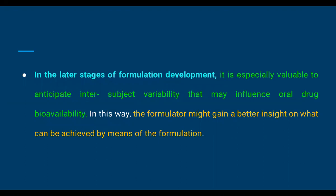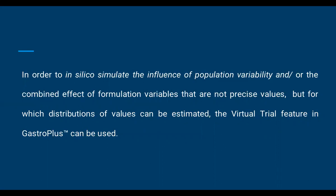First topic: virtual trial. In the later stages of formulation development, it is especially valuable to anticipate inter-subject variability that may influence oral drug variability. In this way, the formulator might gain better insight into what can be achieved by means of formulation. In order to predict or understand in silico simulation on the influence of population variability or the combined effect of formulation variability — not precise values, but understanding which distribution of values can be estimated.